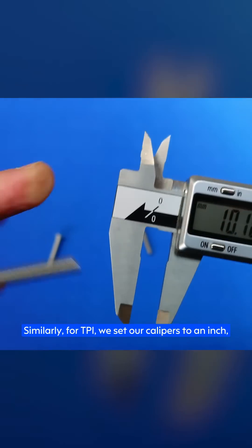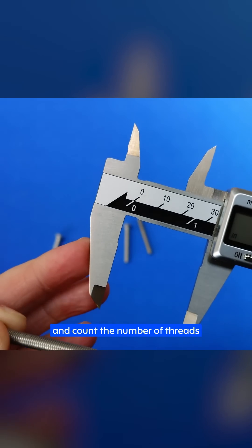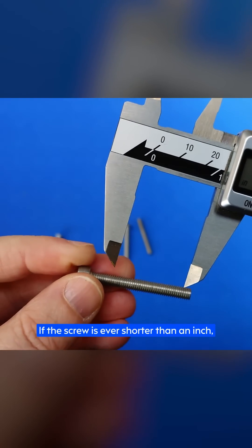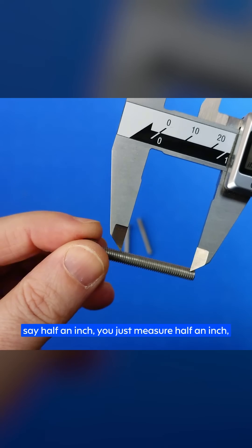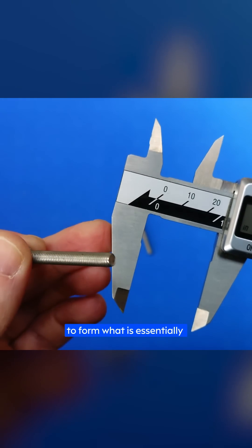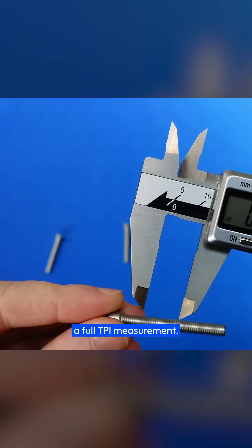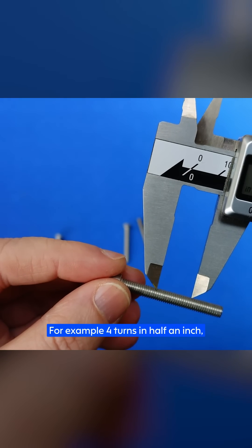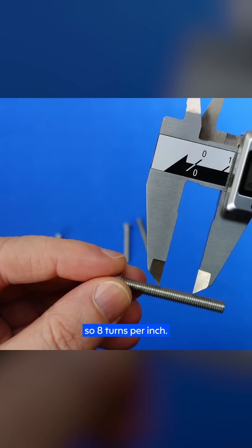Similarly for TPI, we set our calipers to an inch and count the number of threads in between that spacing. If the screw is ever shorter than an inch, say half an inch, you just measure half an inch and then double the number of threads to form what is essentially a full TPI measurement. For example, four turns in half an inch, so eight turns per inch.